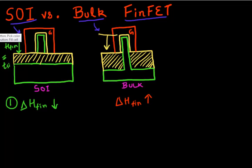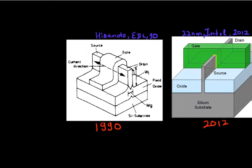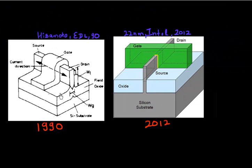But on the other hand, if you're looking from an economics point of view, bulk substrates are cheaper and SOI substrates are more expensive. So in fact, a lot of initial work on FinFETs was in fact done on SOI substrate.